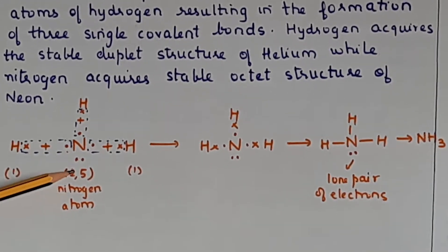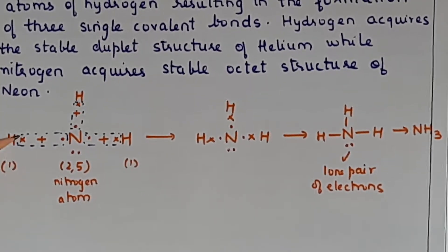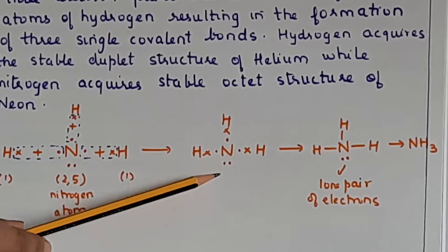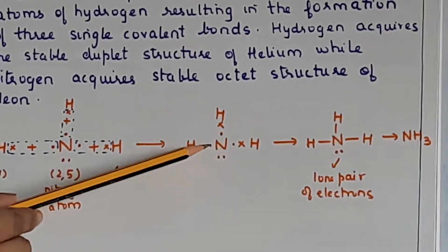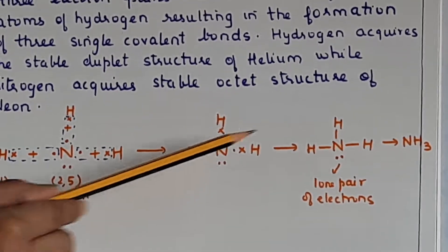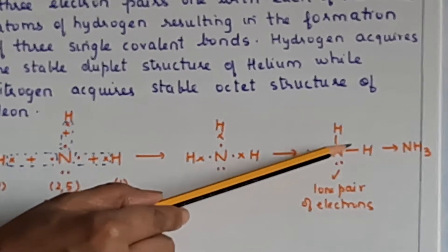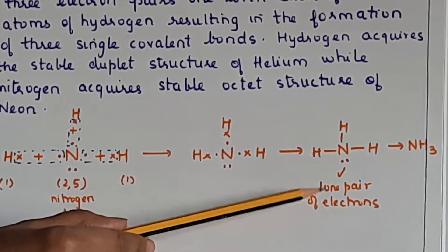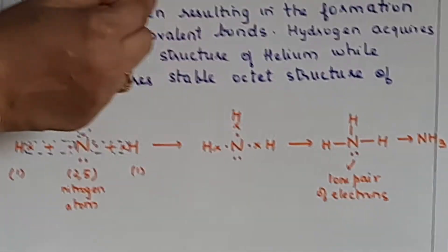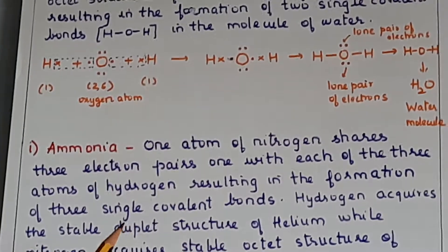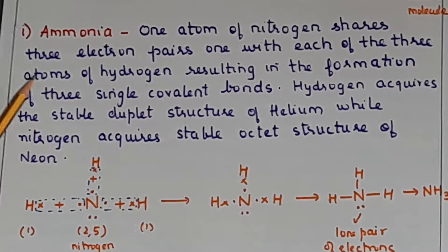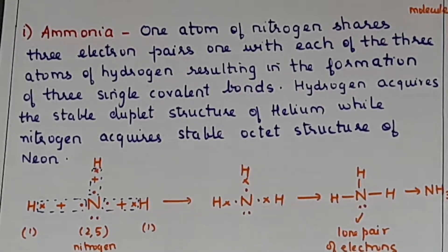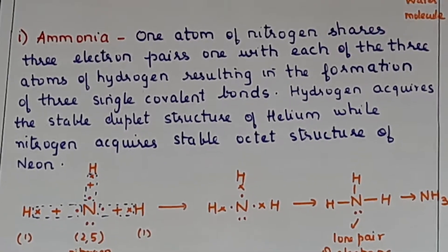For ammonia, show nitrogen's five valence electrons, then each hydrogen's one electron. Show overlap by dotted lines. One electron pair is shared between nitrogen and each hydrogen, resulting in three single covalent bonds. Mark the lone pair of electrons on the nitrogen atom. In summary: ammonia has one lone pair of electrons and water has two lone pairs. Hydrogen chloride, water, and ammonia are polar covalent compounds; the earlier six compounds discussed are all non-polar covalent compounds.